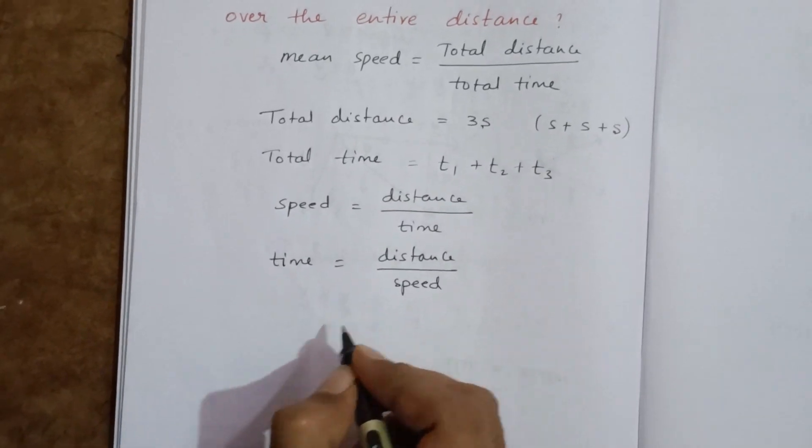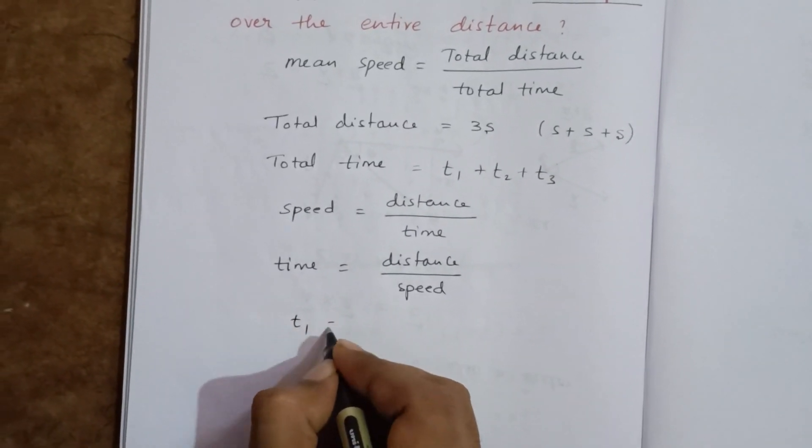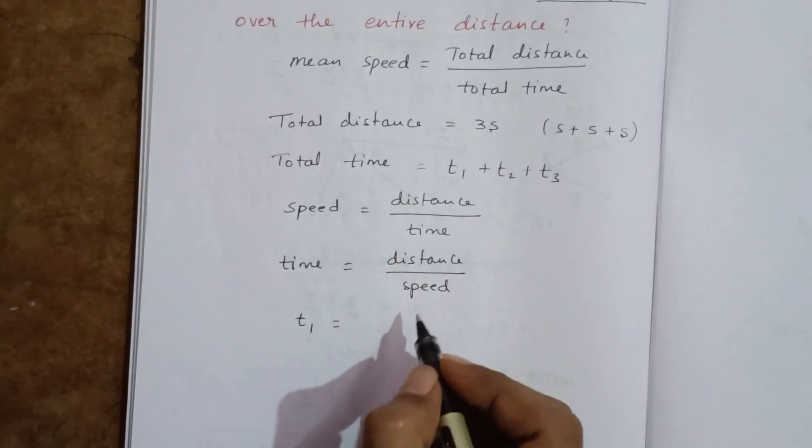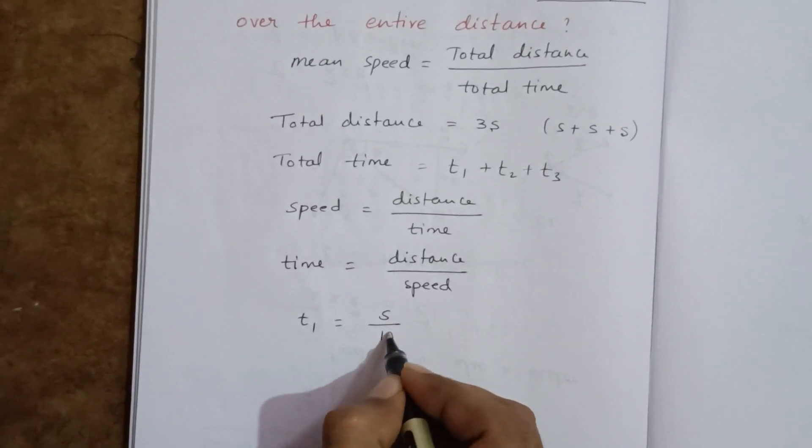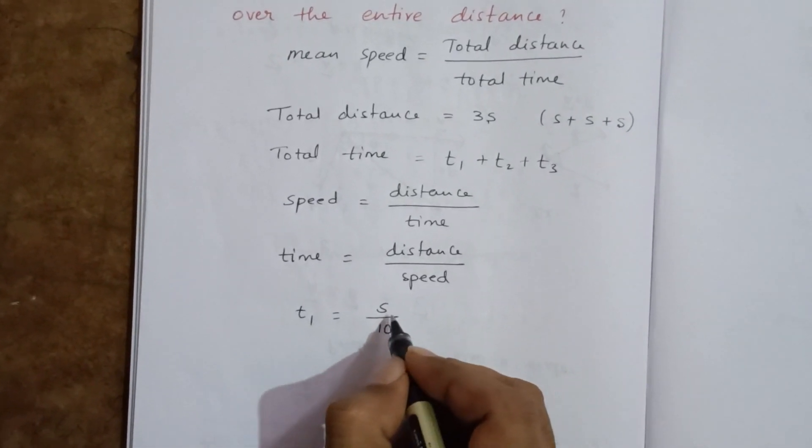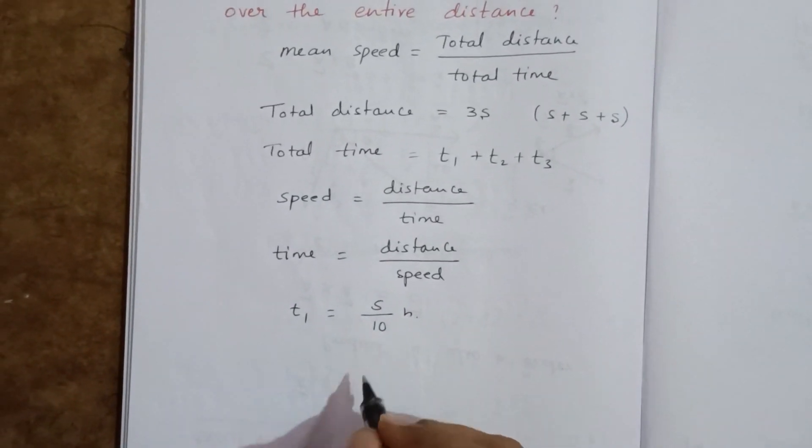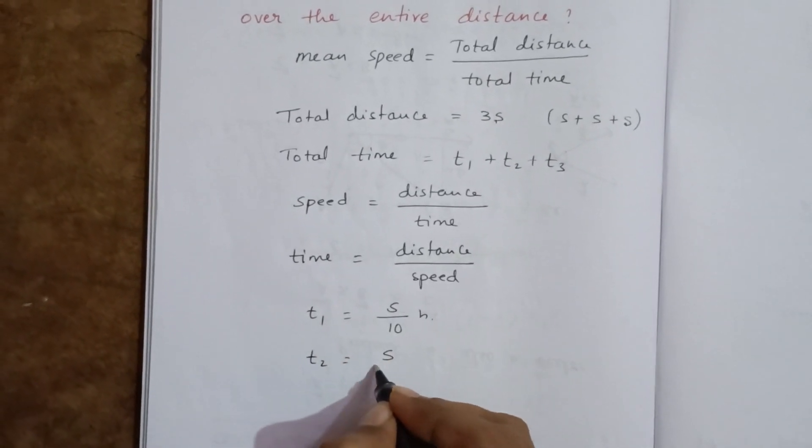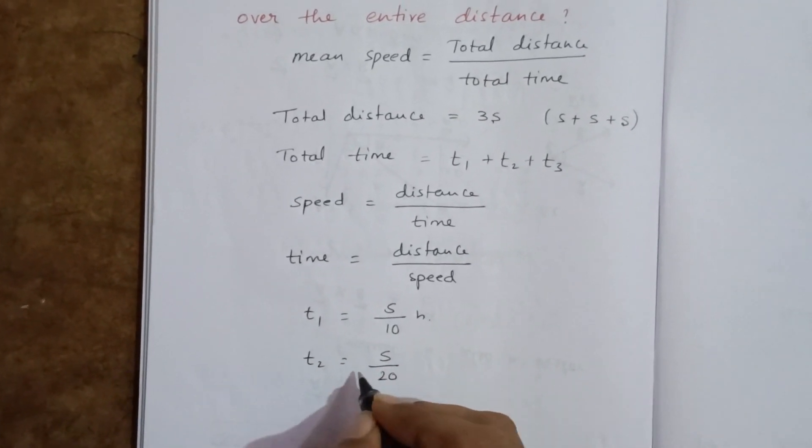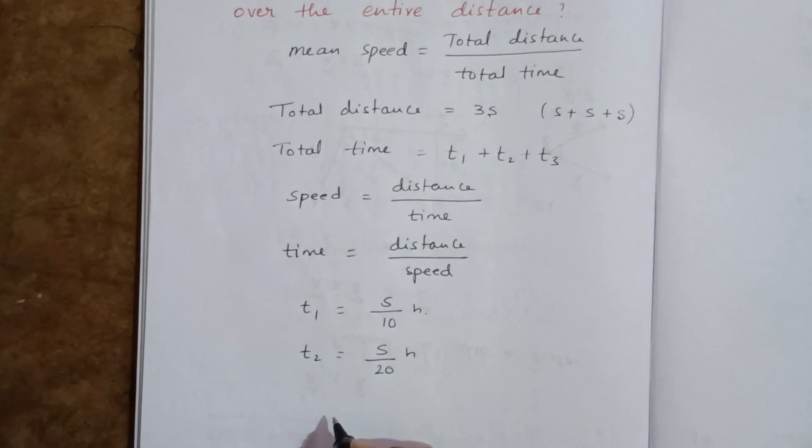Time t1 equals distance s divided by speed 10 km per hour, which is s by 10 hours. T2 equals s by 20 hours, and t3 equals s by 60 hours.